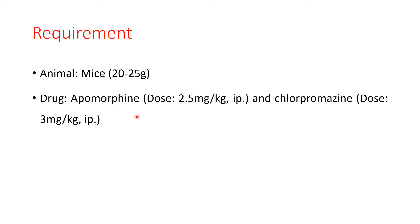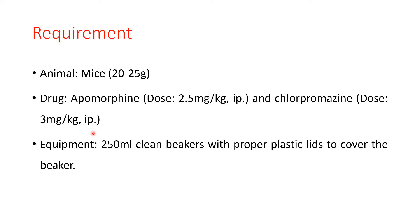Requirements for this experiment: animals — mice 20 to 25 grams; drug apomorphine at a dose of 2.5 mg per kg intraperitoneally; and chlorpromazine at a dose of 3 mg per kg intraperitoneally. Equipment required is a 250 ml clean beaker with a proper plastic lid to cover the beaker.